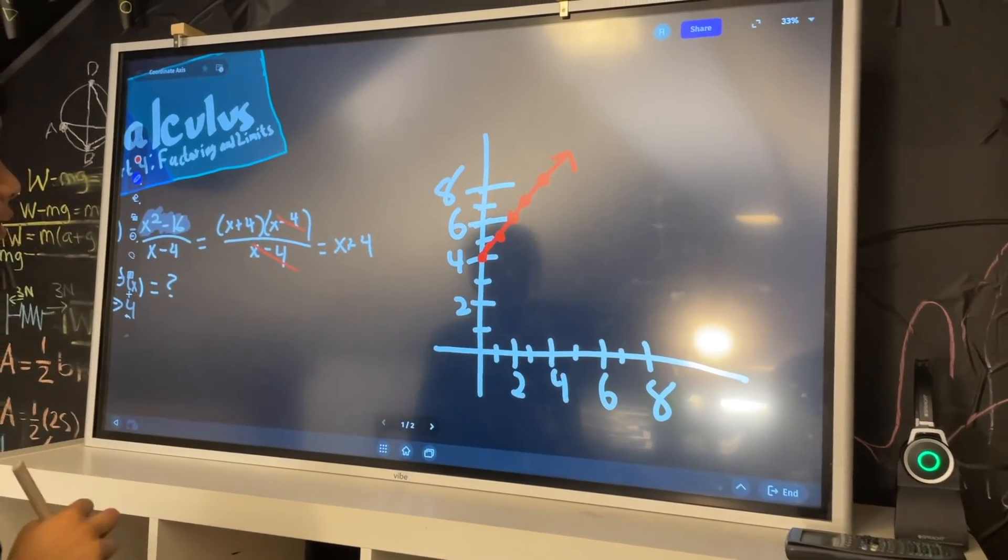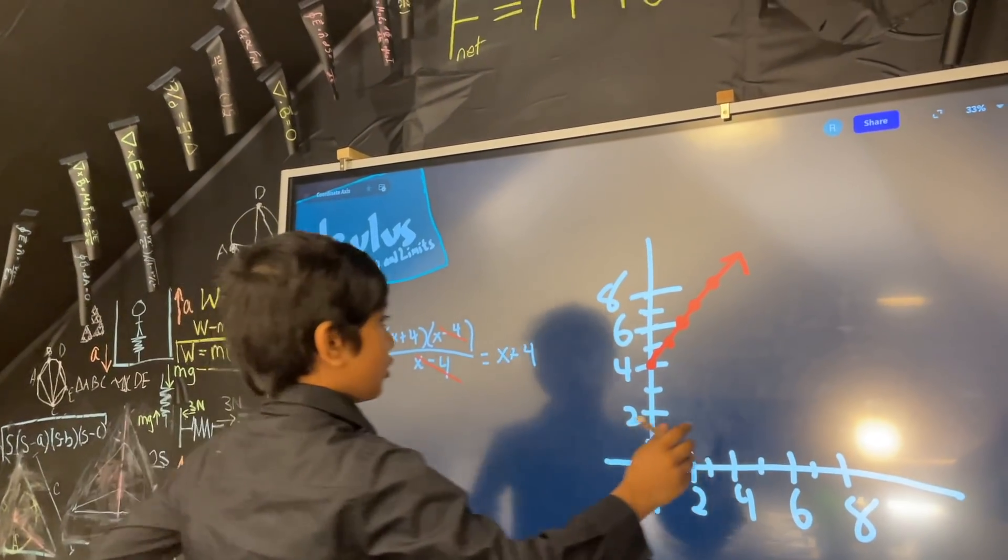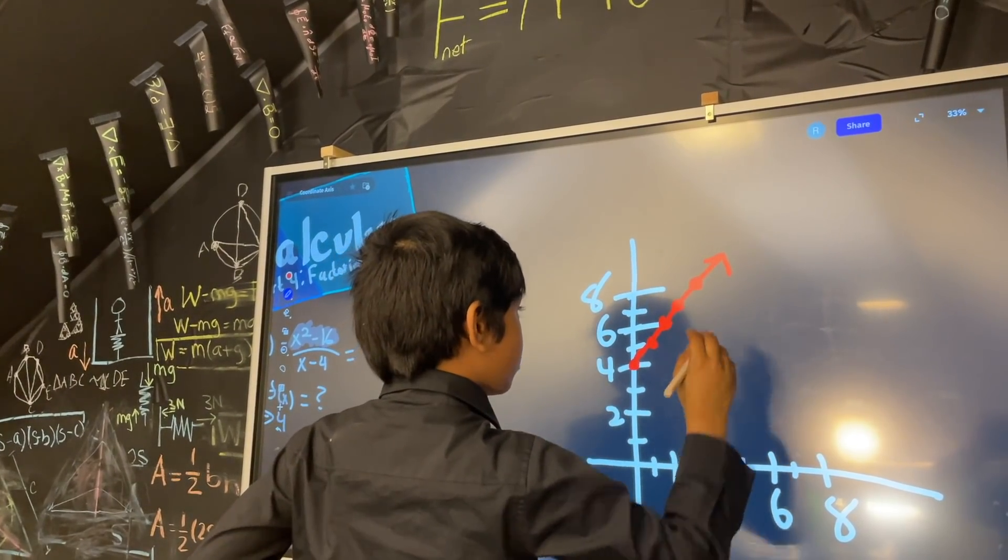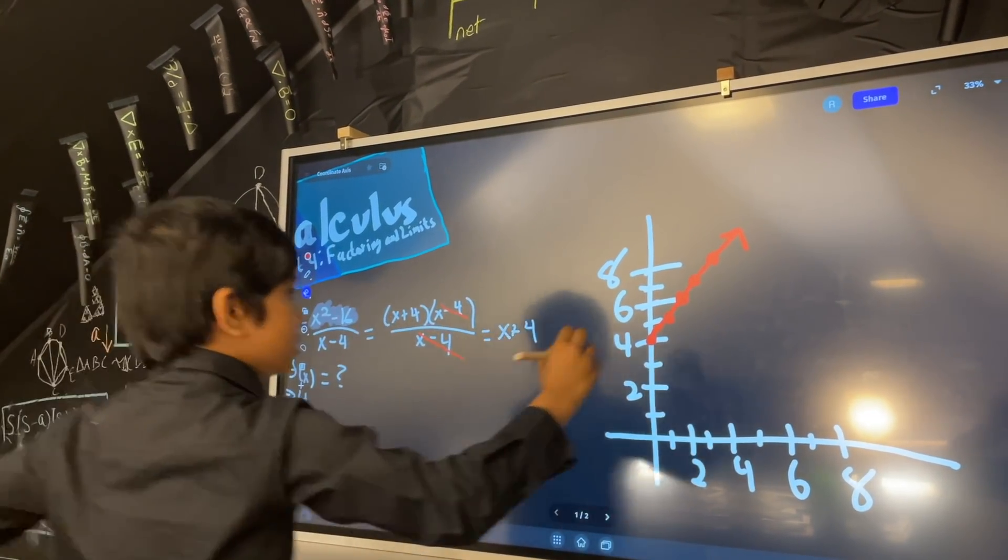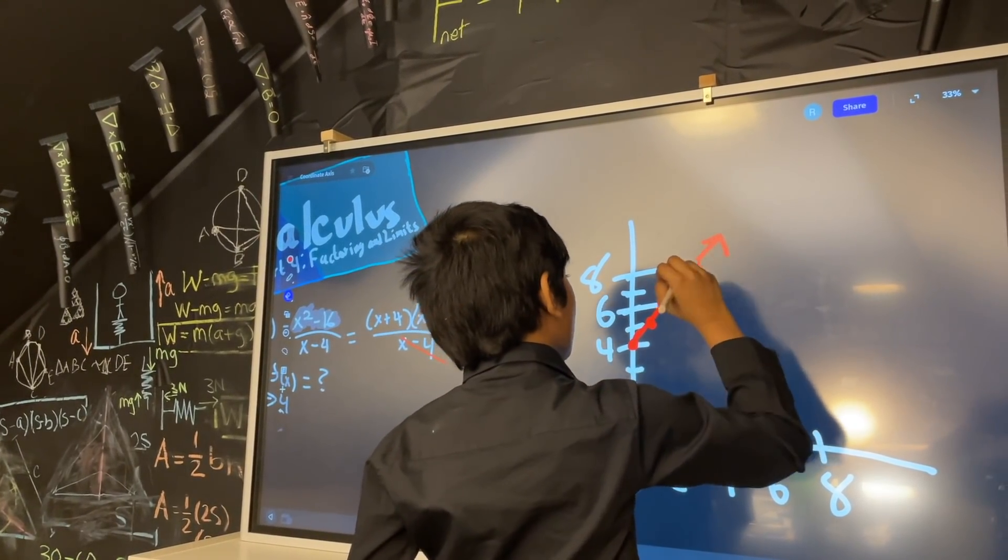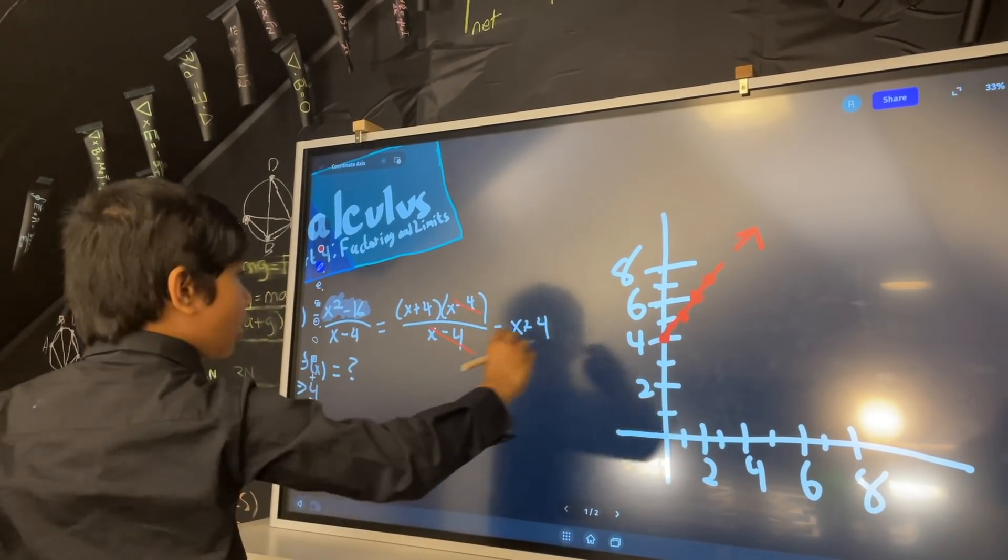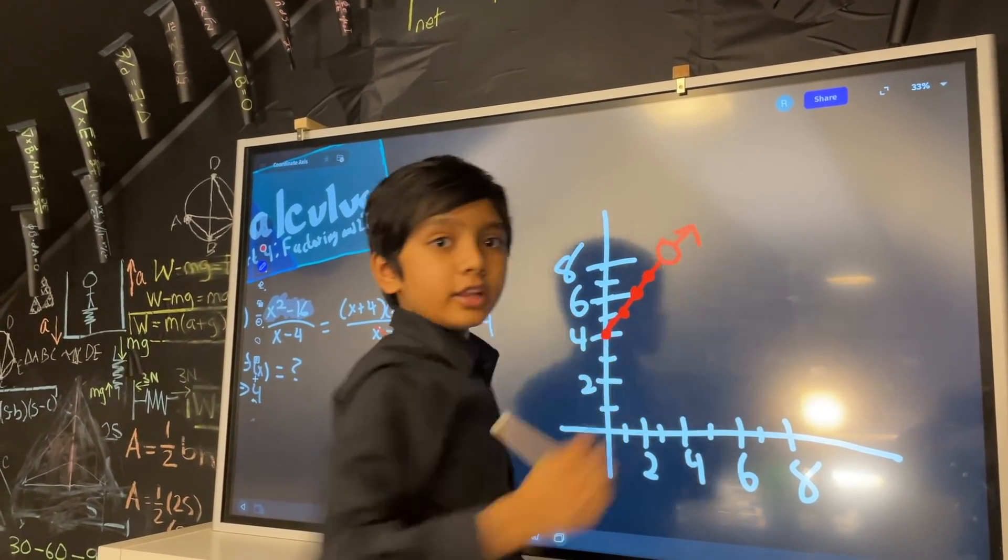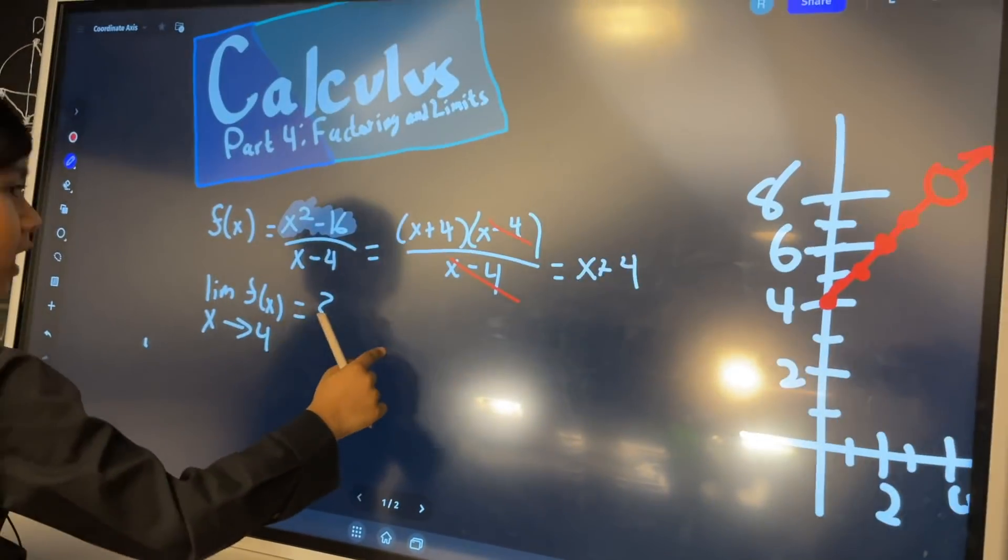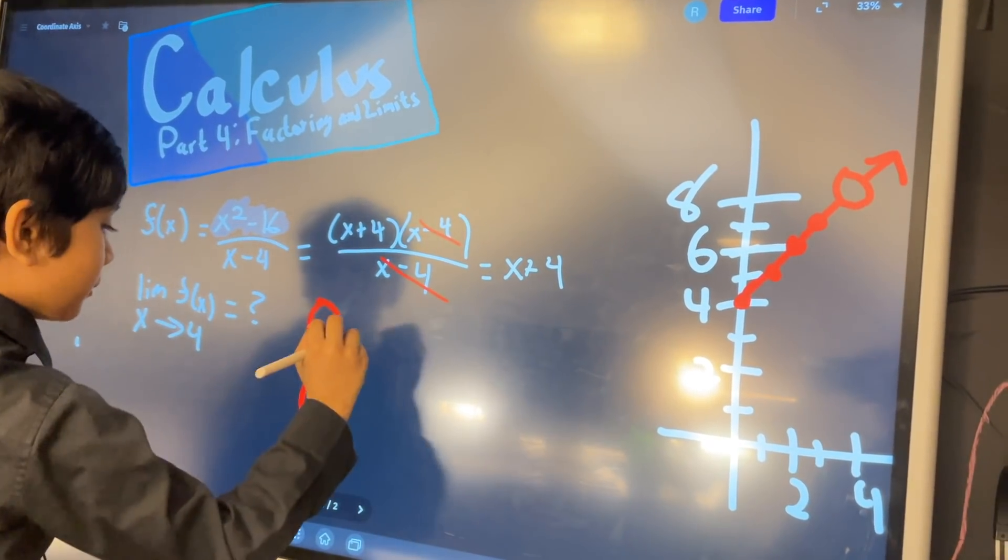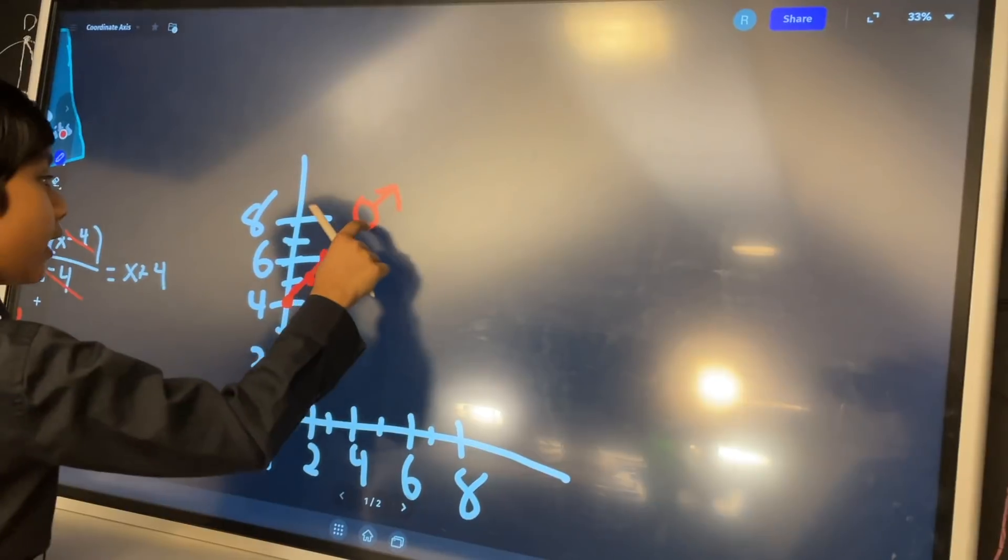But the problem with this model is it doesn't account for what happens here. Because you see, this place is undefined on the graph. Since you know you got in a little bit of trouble with the math police, this is an undefined point on the graph.